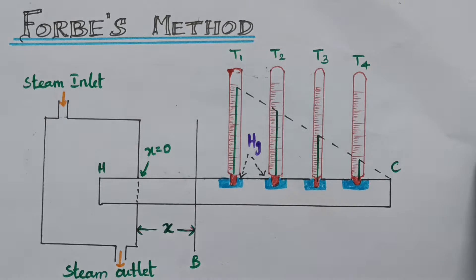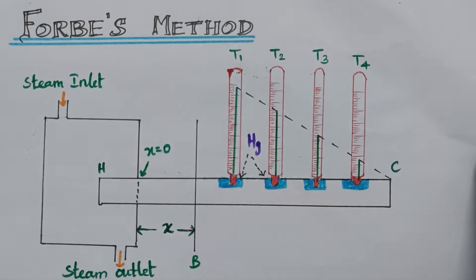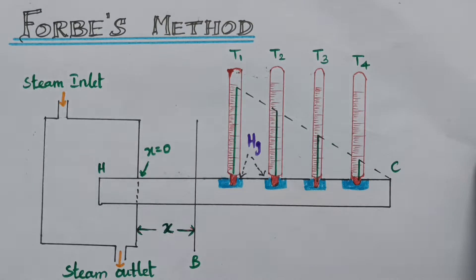Today we are discussing the 4P method. This 4P method is used for the determination of thermal conductivity for a good conductor. Some materials are good conductors, like copper, iron, and aluminium. Here we have to find the thermal conductivity of a good conductor.